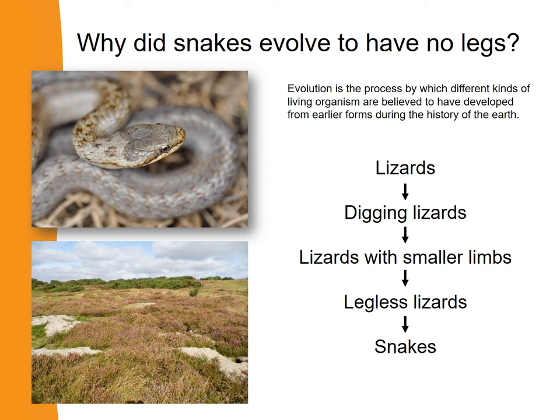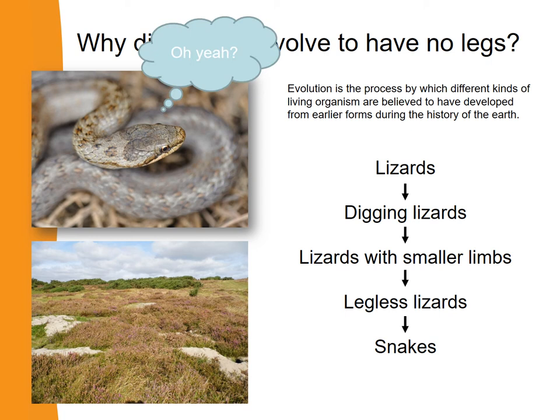One question you might have is: why didn't all lizards evolve to lose their legs and become snakes? The reason is that not all lizards had the same adaptations serving them in the same ways. Not all lizards needed to go down tunnels to catch their prey, so we still have lizards today because they are adapted to suit their own habitats.